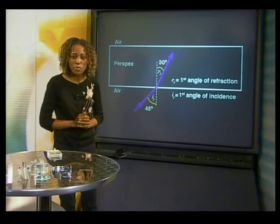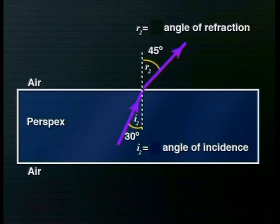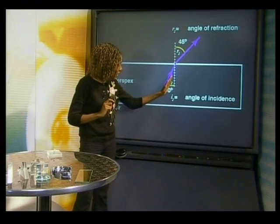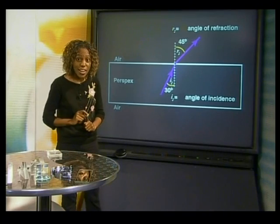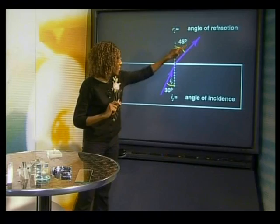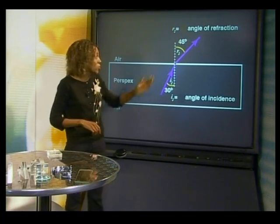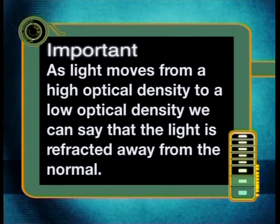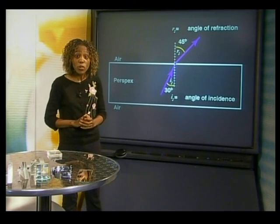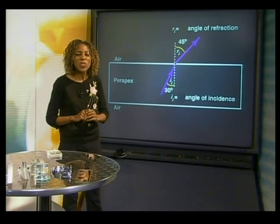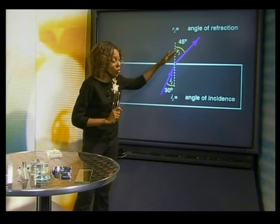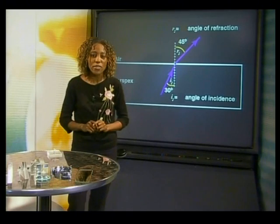Now let's consider the second boundary. Here, the light is moving from a high optical density perspex to a low optical density air. The angle of incidence is smaller than the angle of refraction, so the light is moving away from the normal because the angle is getting bigger. This means that as light moves from a high optical density to a low optical density, we say that the light is refracted away from the normal — the angle gets bigger. Inside the block the light was traveling slower, but increased speed when crossing the boundary into air.